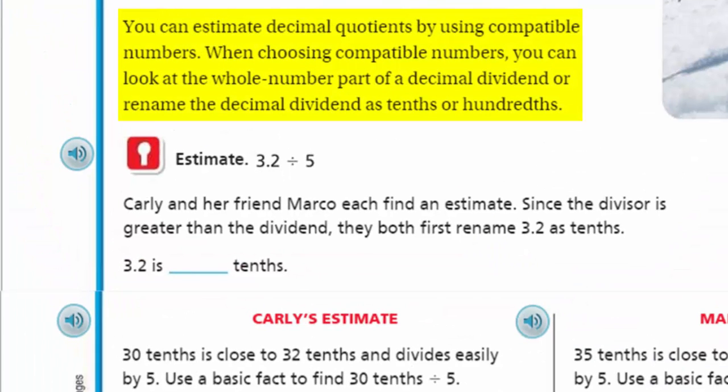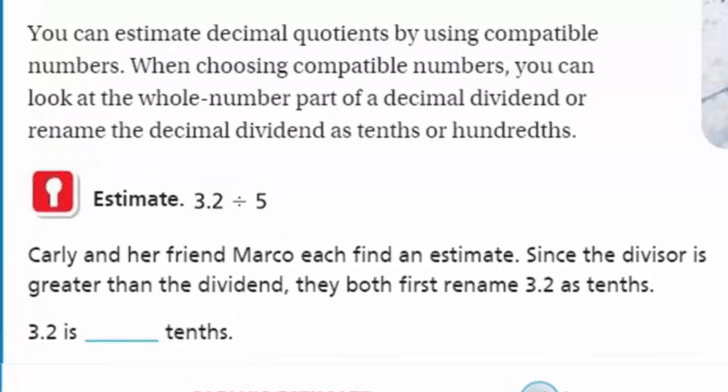It says you can estimate decimal quotients by using compatible numbers. When choosing compatible numbers, you can look at the whole number part of a decimal dividend or rename the decimal dividend as tenths or hundredths. The purpose of estimating is to get a good rounded number and to make it easy to divide. We need to use compatible numbers - numbers that like each other because they make something significant.